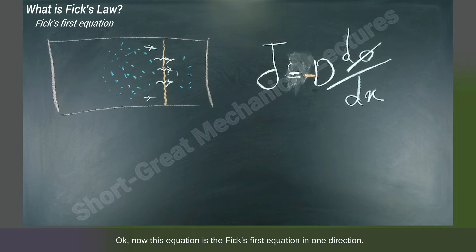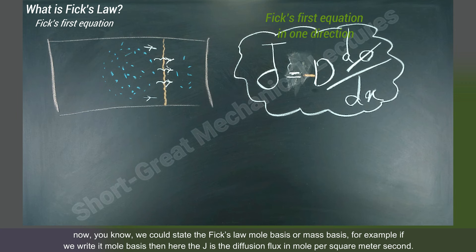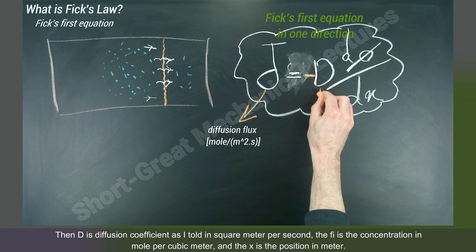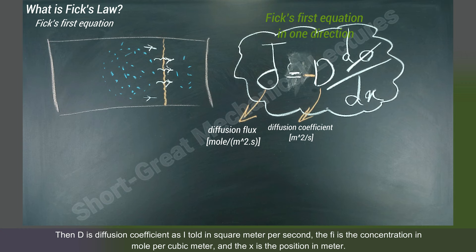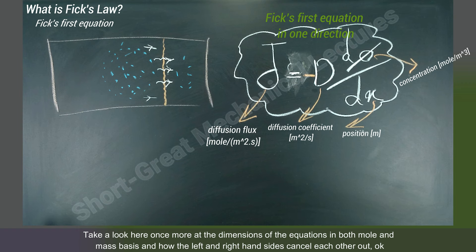This equation is Fick's first equation in one direction. We can state Fick's law on a mole basis or mass basis. For example, on a mole basis, J is the diffusion flux in mole per square meter per second, D is the diffusion coefficient in square meters per second, phi is the concentration in mole per cubic meter, and x is the position in meters. Take a look at the dimensions of the equation in both molar and mass bases and how the left and right hand sides cancel each other out.